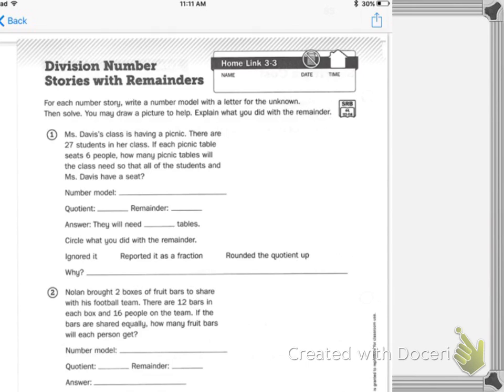So, first things first, I need to do 27 plus 1. There are 27 students plus 1 teacher equals 28. I then have to divide 28 by 6 because that's how many people can sit at one table. So, my number model would be 28 people divided by 6 equals T tables.